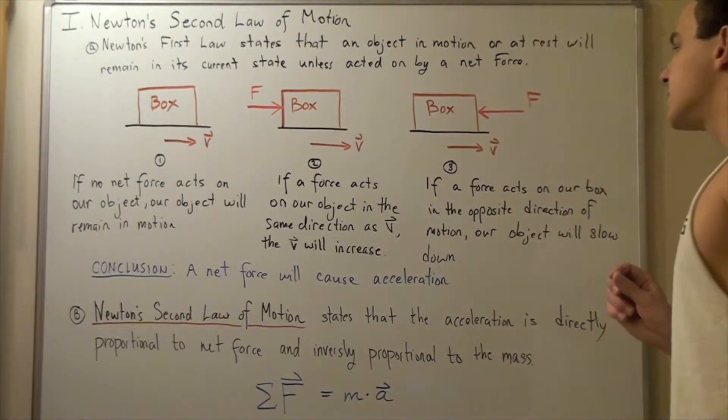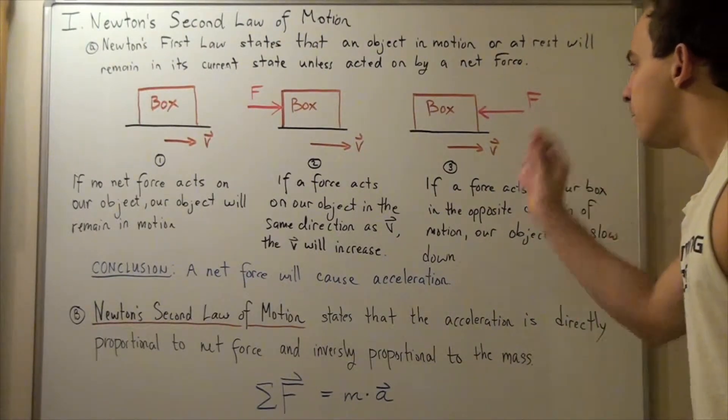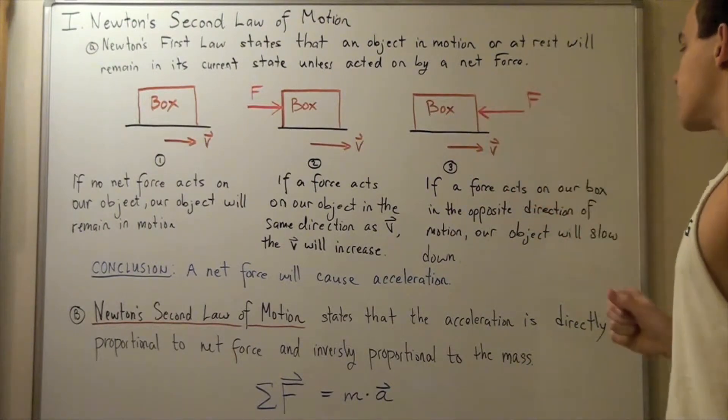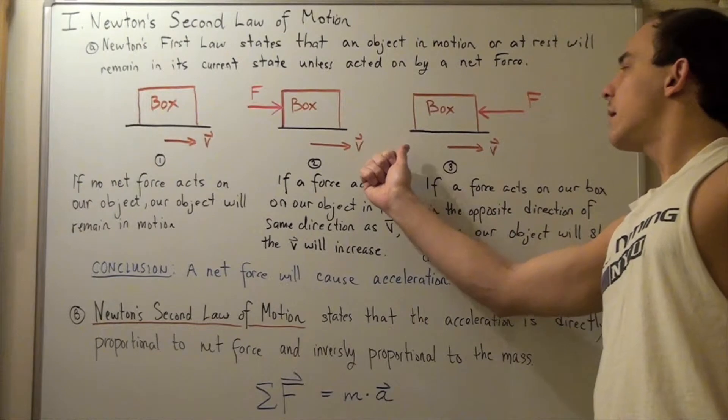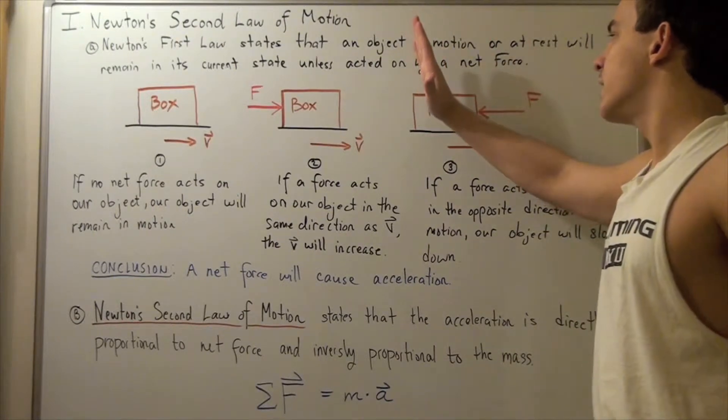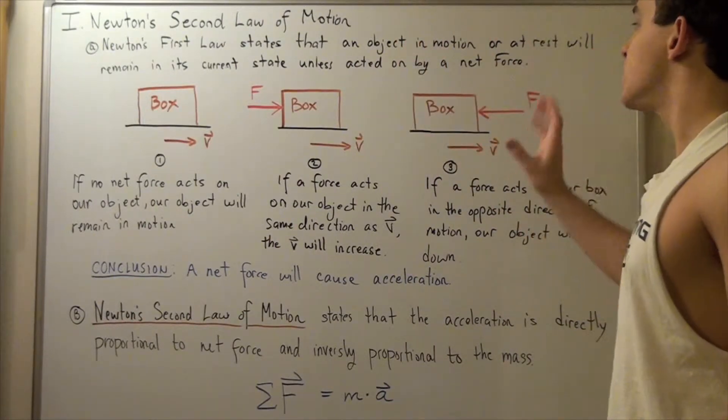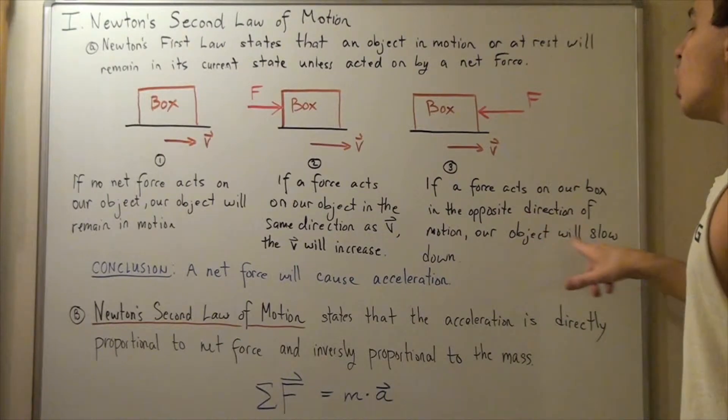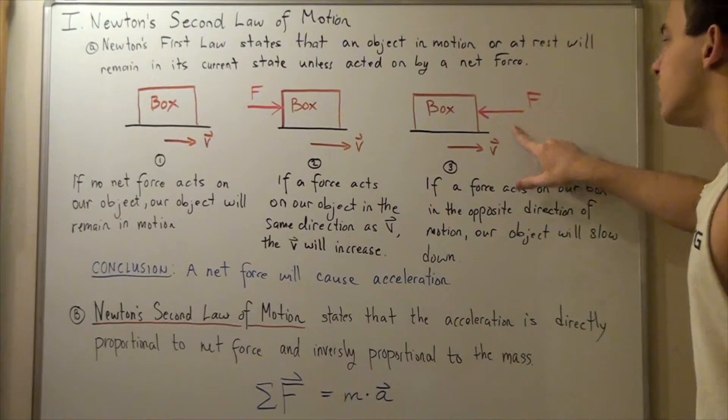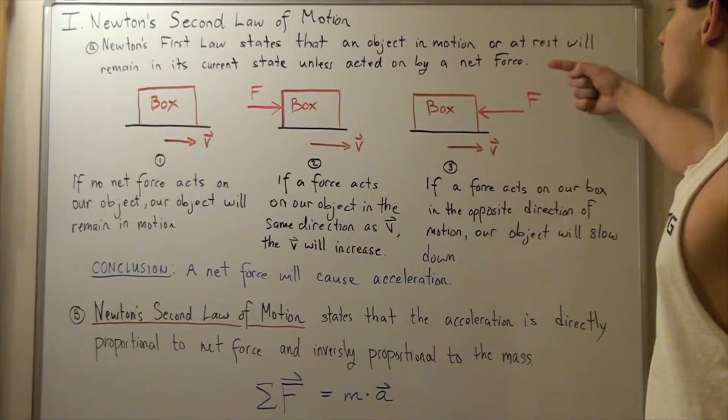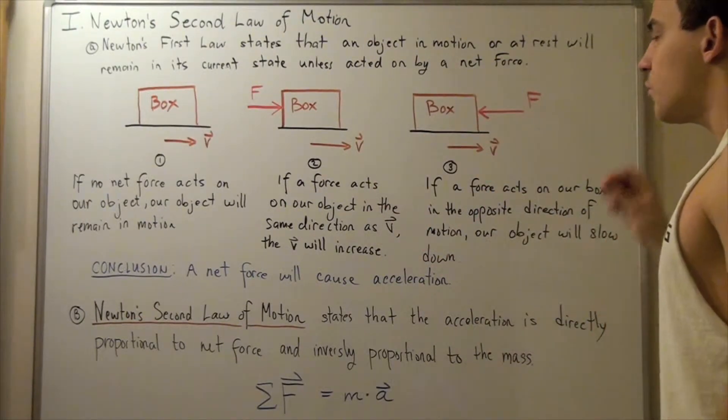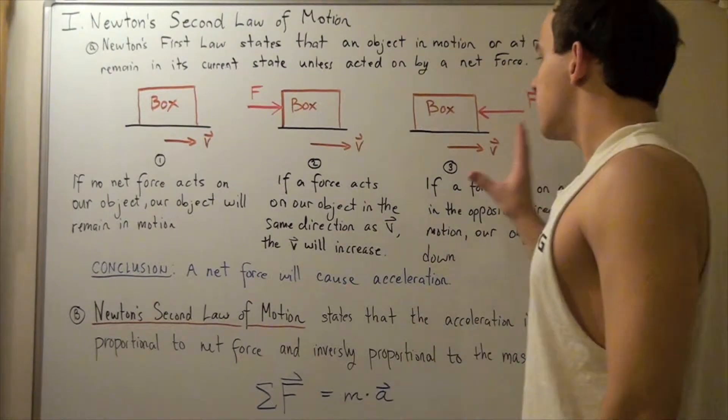Likewise, let's look at system number three. Now suppose we apply a net force on our box in the opposite, reverse direction of motion. Even though our object is moving this way, we're going to apply our force this way. What will happen to our box? Well, our object will slow down. In other words, there will be a change in velocity and the velocity will become less because our force and our velocity, the motion, is in two different directions.